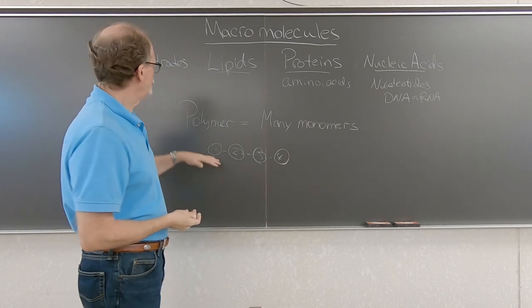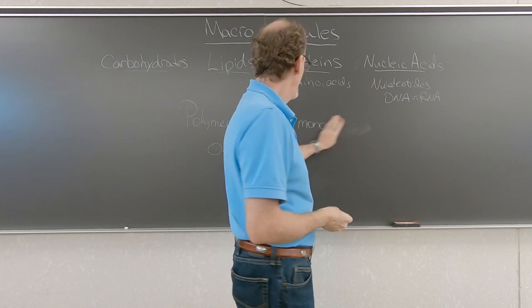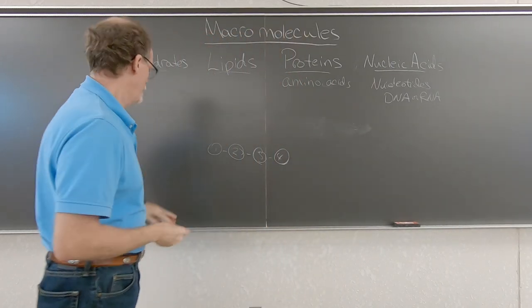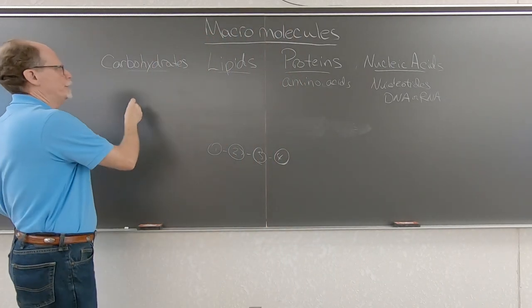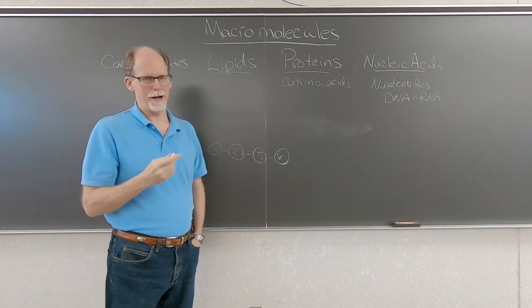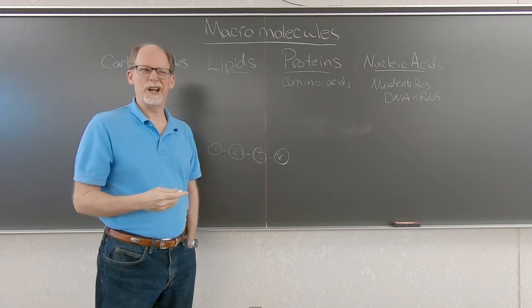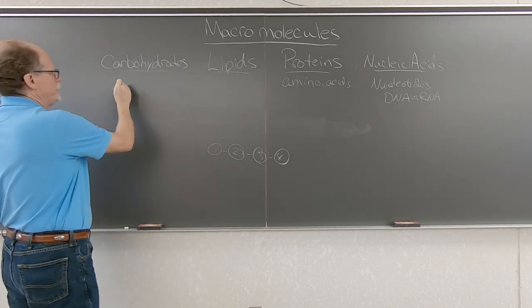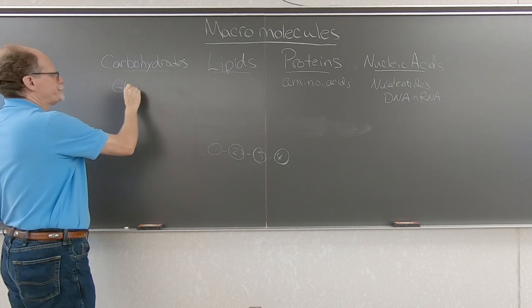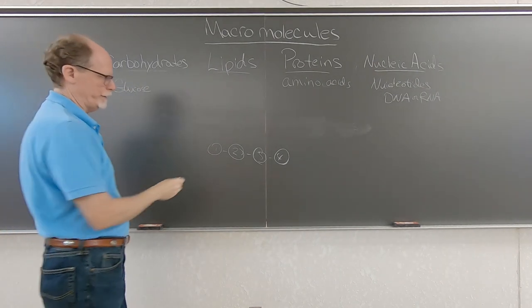Okay, so the first one that we want to talk about is the carbohydrates. And there are many different monomers for carbohydrates, but the ones that we're mainly focusing on are the ones that contain glucose as the monomer.